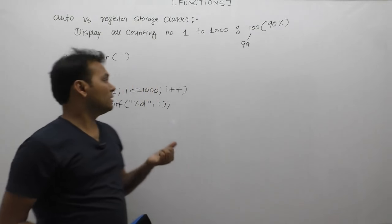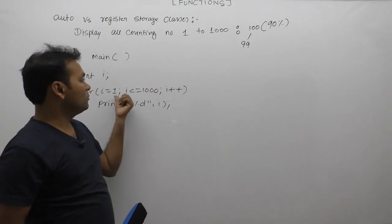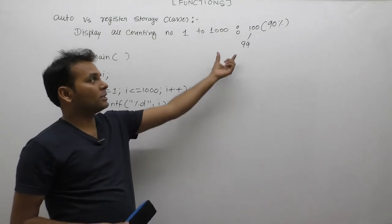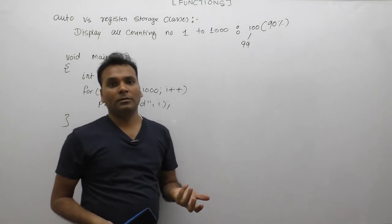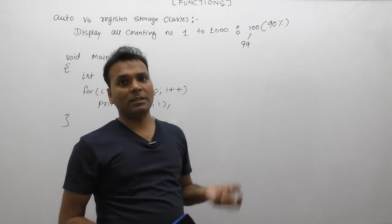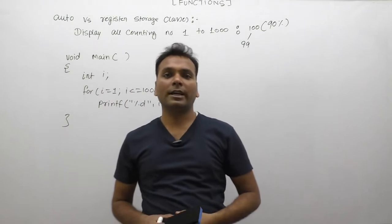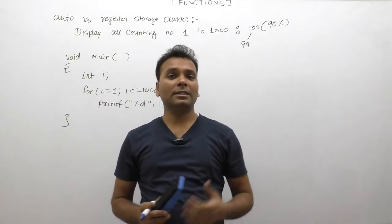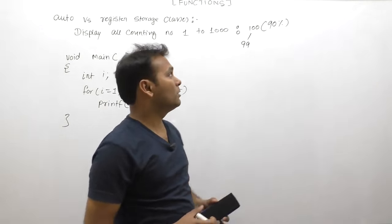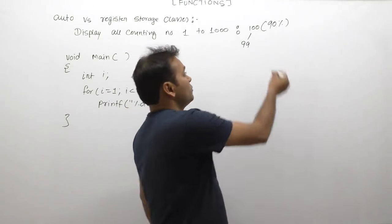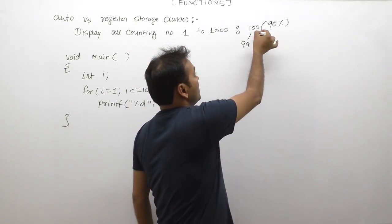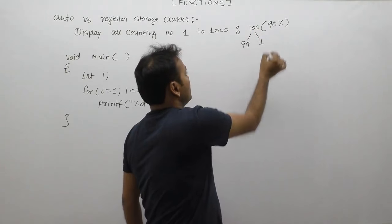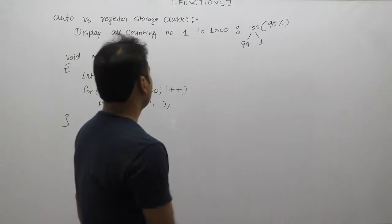All students' code was correct and produced the expected output — all counting numbers from one to one thousand. Then, in this particular case, which student would get selected? Suppose one student out of a hundred wrote their code differently.